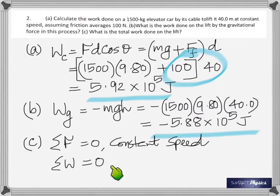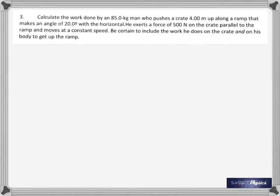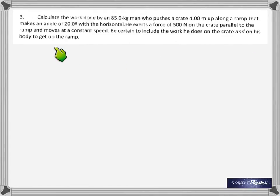Next problem: calculate the work done by an 85-kilogram man who pushes a crate 4 meters up along a ramp that makes an angle of 20 degrees with the horizontal. He exerts a force of 500 newtons on the crate parallel to the ramp and moves at constant speed. Be certain to include the work he does on the crate and on his own body, because he's also lifting himself up.